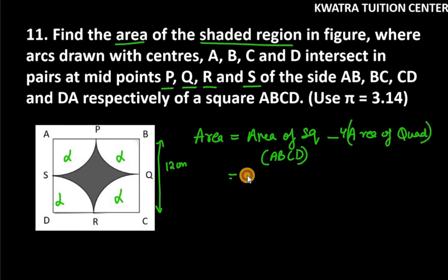Now area of square, it is 12 into 12, side into side. So 12 into 12 is 144 minus 4 area of 1 quadrant.